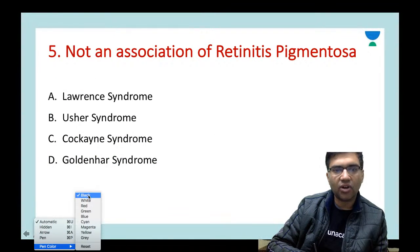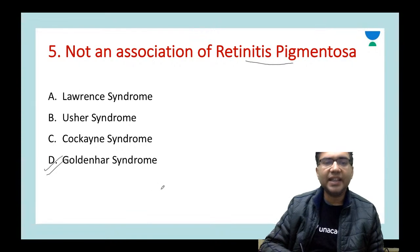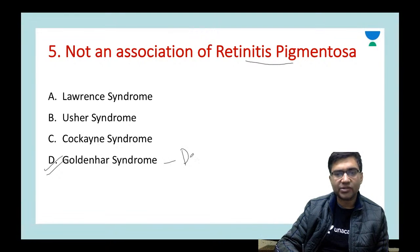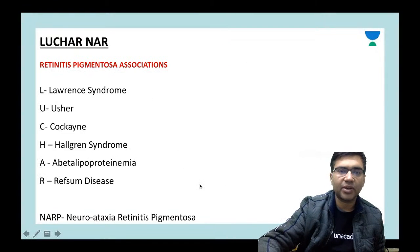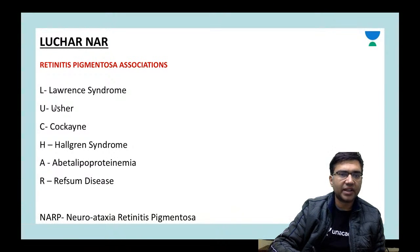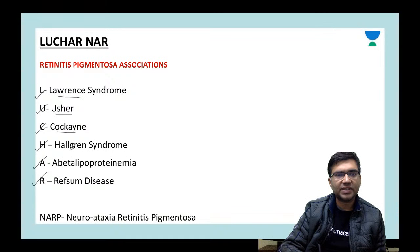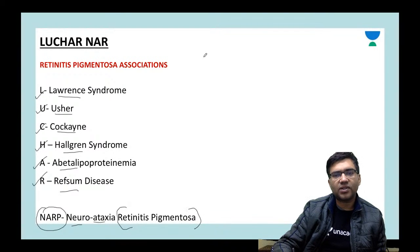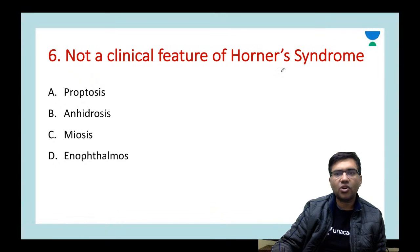Next question: which is NOT an association of retinitis pigmentosa? Options are Lawrence, Usher, Cockayne, and Goldenhar syndrome. The answer is D — Goldenhar syndrome (which has an association with lipodermoid). The important associations of RP can be remembered with the mnemonic 'LUCHENAR': L = Lawrence syndrome, U = Usher syndrome, C = Cockayne syndrome, H = Hallgren syndrome, A = abetalipoproteinemia, R = Refsum disease, and NARP = neuropathy, ataxia, retinitis pigmentosa.